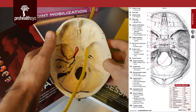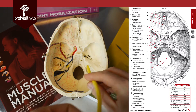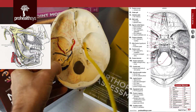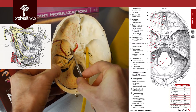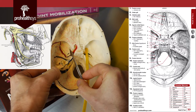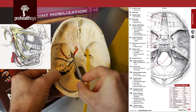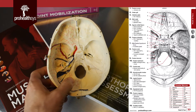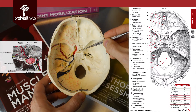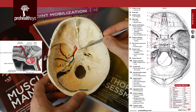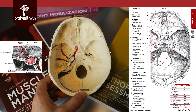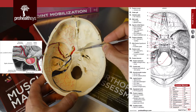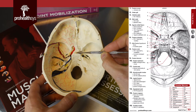Spinning back to the cranial vault, we see the foramen rotundum — this small little hole right here — which carries the trigeminal nerve, second branch, the maxillary division of the trigeminal nerve. Next is the hypophyseal fossa, the area where the hypophysis sits. Another name for the hypophysis is the pituitary gland — your master gland sits in this sella turcica hypophyseal fossa.